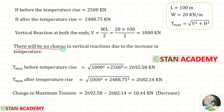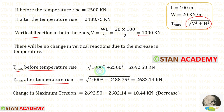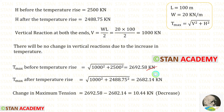There will be no change in the vertical reactions due to the increase in temperature. Now using this formula, we can find the maximum tension before the temperature rise and after the temperature rise. We know that the vertical reaction will not change, so in both cases it is 1000 kilo Newton. But the horizontal thrust will be different. Finally, we will get these two values. Let us find the change in the maximum tension.